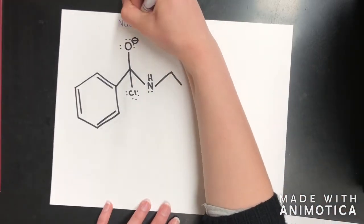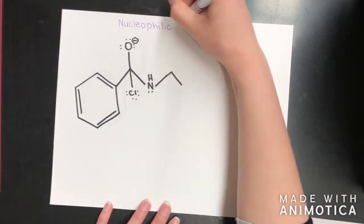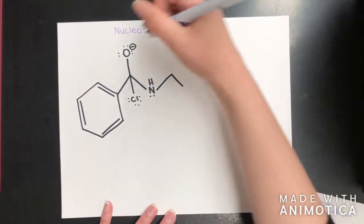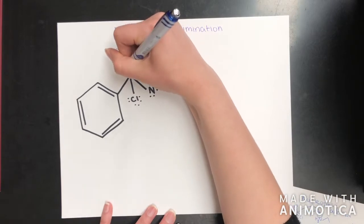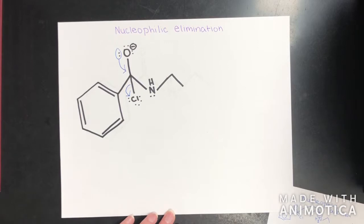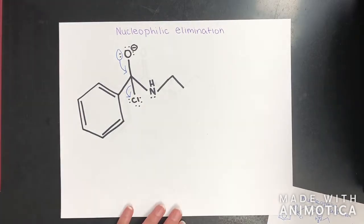The final step is a nucleophilic elimination. The lone pair on the oxygen is going to reform that double bond, which will then kick off that chlorine. Since carbon can only have four bonds, the chlorine gets kicked off rather than the nitrogen group because the chlorine is a better leaving group.